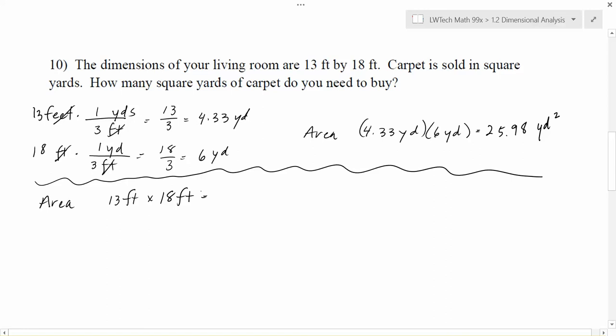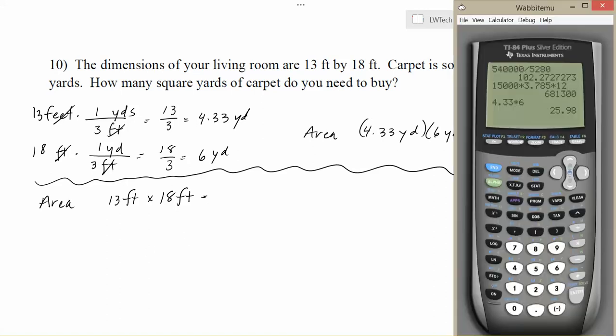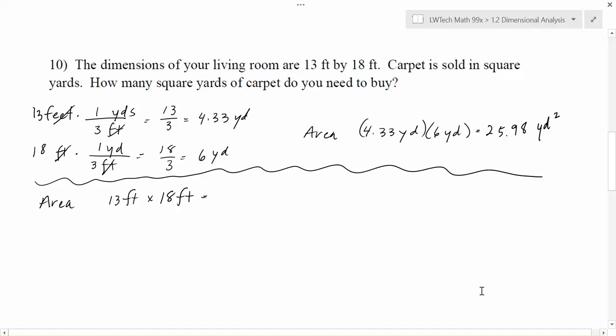We can multiply that together. 13 times 18. Let's see what that is. 13 times 18 gives me 234. And then feet times feet gives me square feet. Notice this is kind of cool. They're both on top if you want to think of it that way. The units don't cancel out. Feet times feet gives me square feet. Just like yards times yards gives me square yards. So that's kind of neat in and of itself.